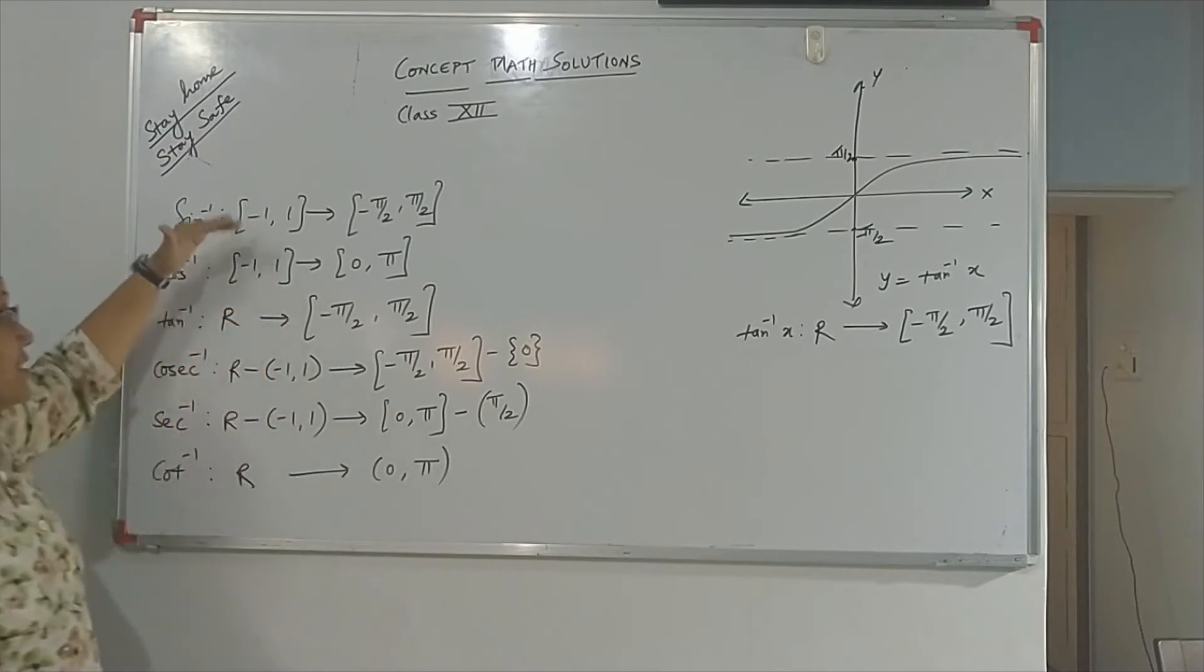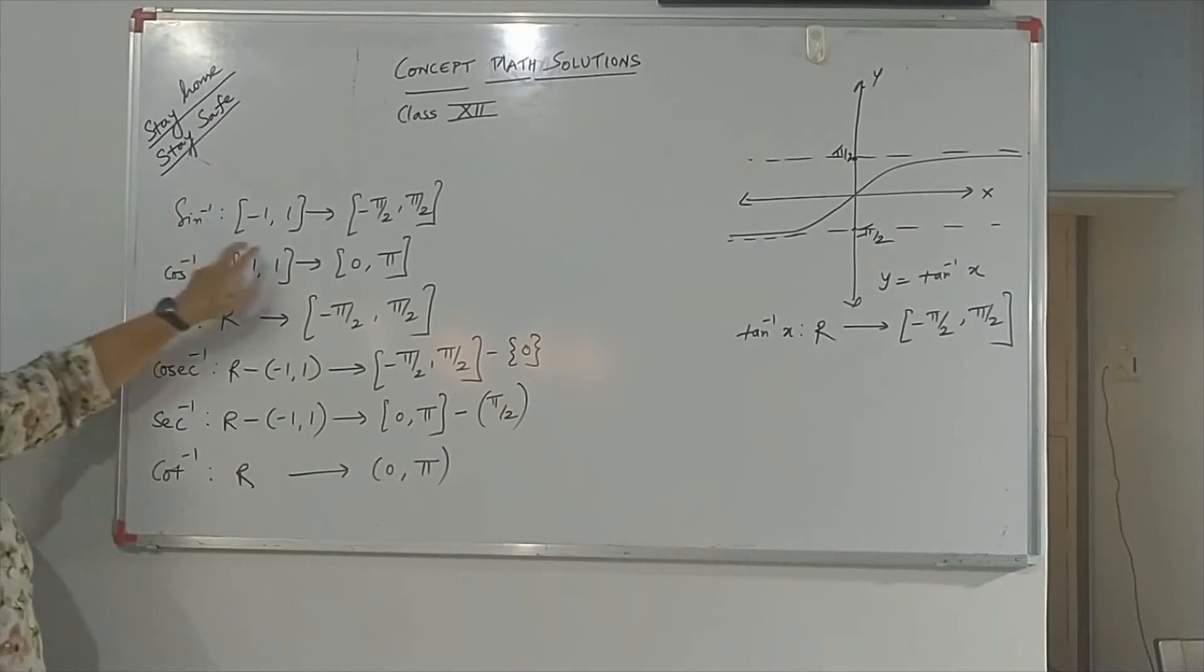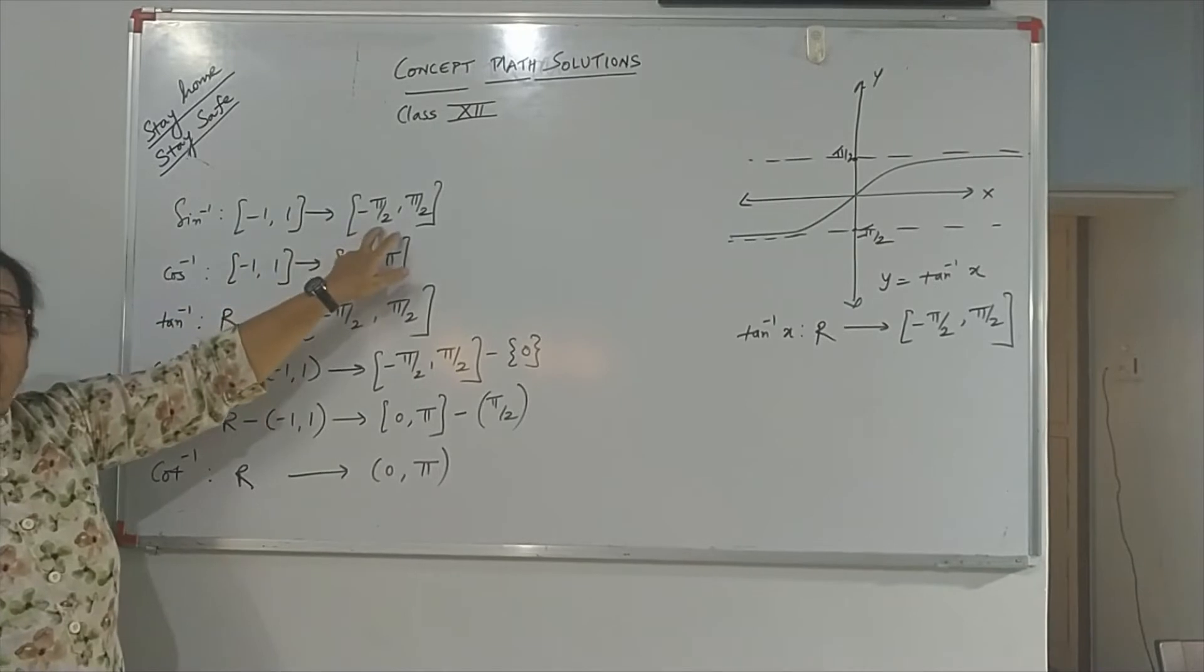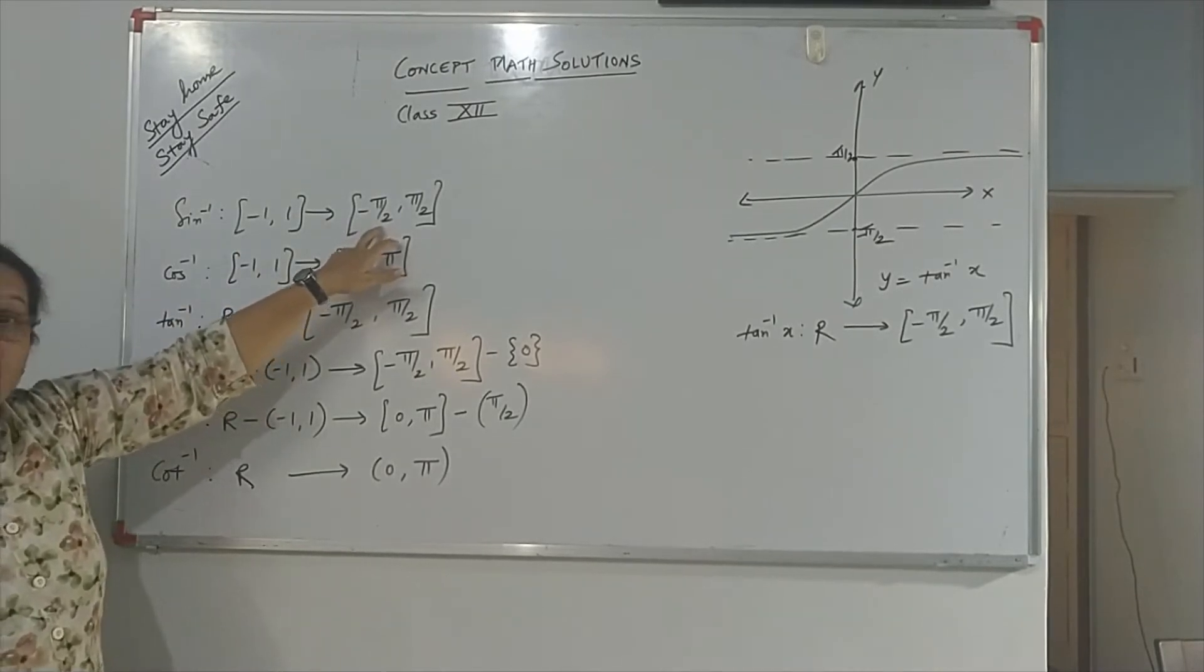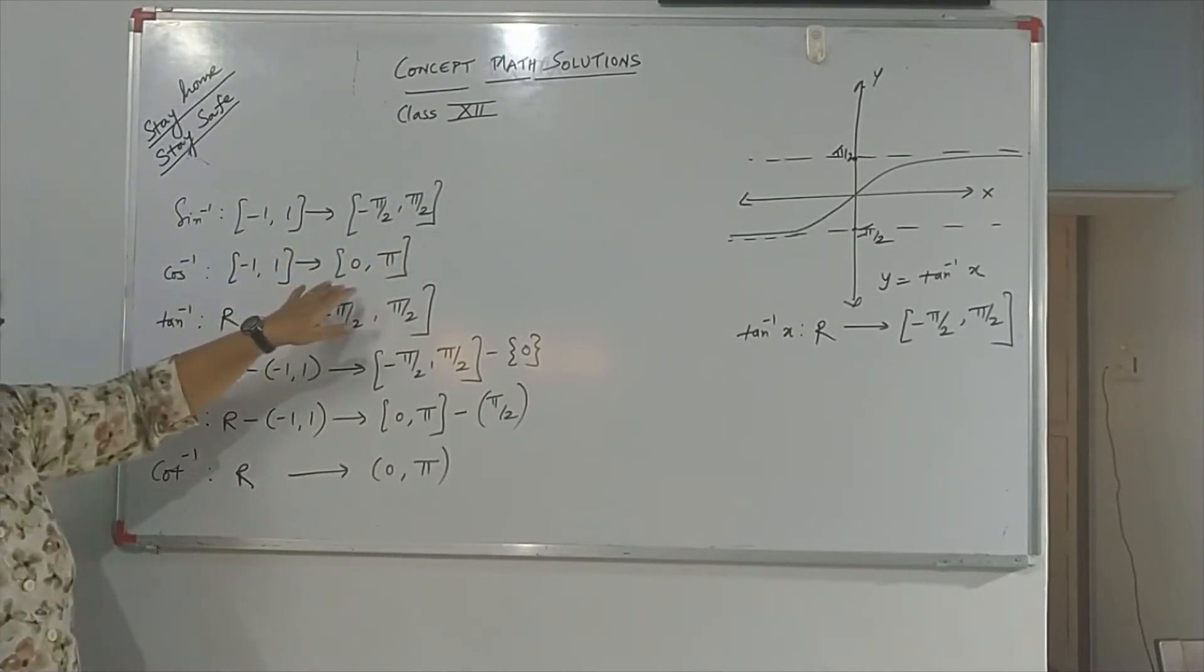These are all six trigonometric functions. Sin inverse, the domain is minus 1 to 1, range is minus π by 2 to π by 2. Then, this is for cos inverse.